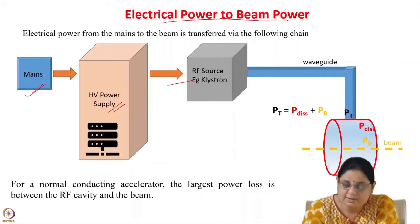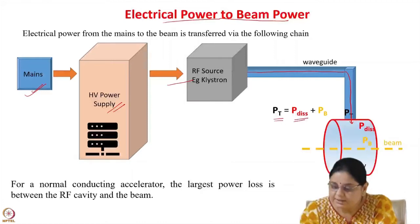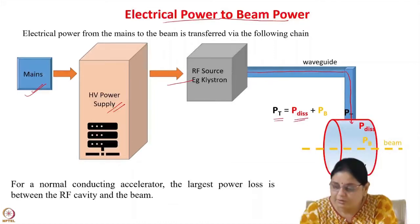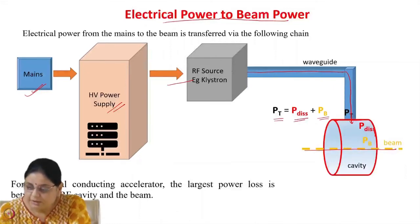This RF source produces high-power electromagnetic waves at the required frequency, and using a waveguide, these electromagnetic waves are transferred into the cavity. Part of the power is dissipated in the cavity because in a normal conducting cavity, the field penetrates up to a distance equal to the skin depth, and there is some RF resistance on the surface. Part of the power is dissipated in the structure and part goes to the beam. If you calculate the efficiency of power transfer from the klystron to the beam, this efficiency comes out to be very small.